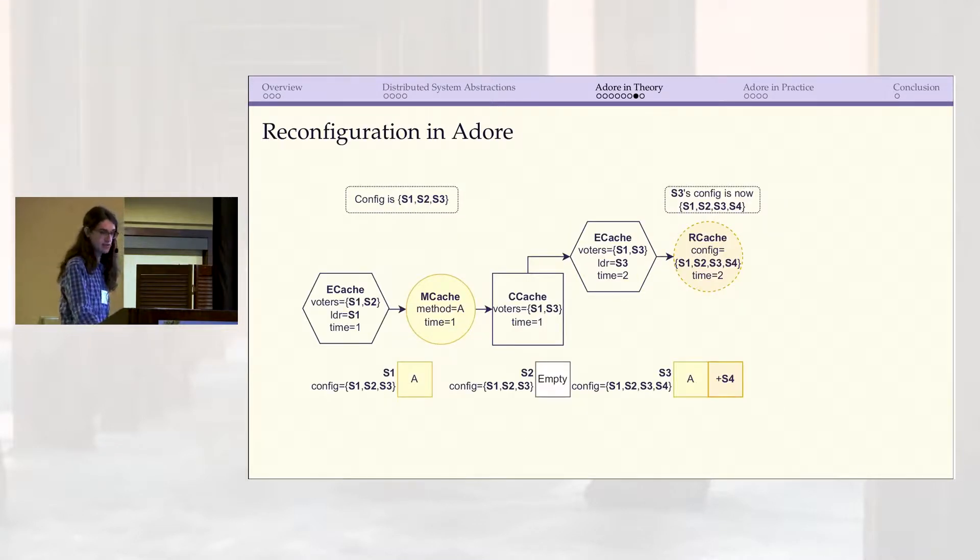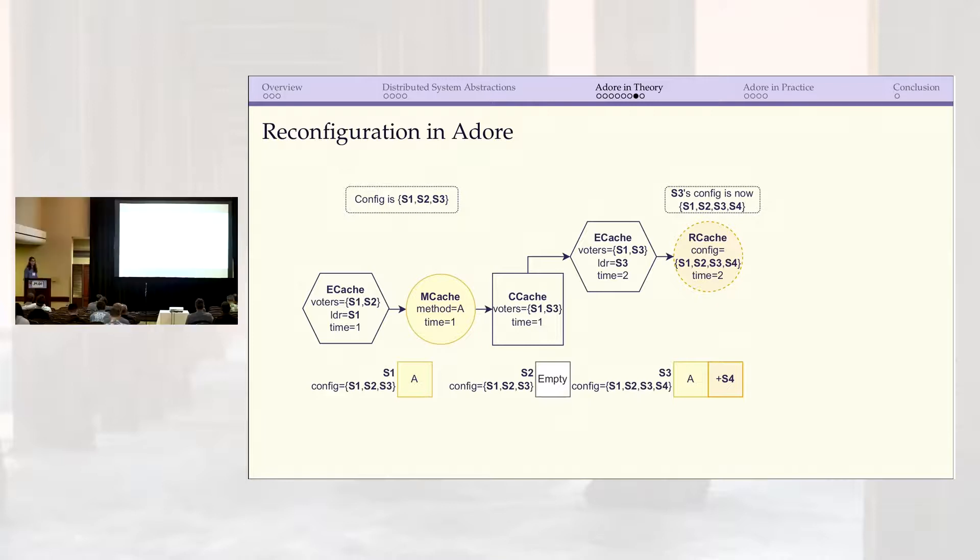Now let's see how reconfiguration fits into all of this. Adore's reconfiguration scheme is based on a generalized version of that Raft one that I mentioned earlier, because we were interested to see if we could prove that the proposed fix for that safety bug was actually correct. It basically works by leaders proposing a special command containing a new configuration. In Adore, we represent that with an R cache, which is very similar to an M cache, but with the important distinction that this new configuration is used as soon as it enters the server's log without waiting for it to be committed. That's a sort of speculative behavior that means configuration changes can happen more quickly, but it also means we have to be very careful not to break any safety guarantees. There are three rules that have to be followed.